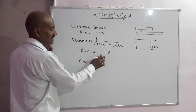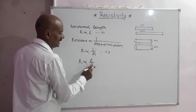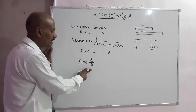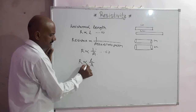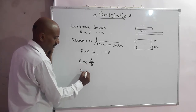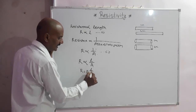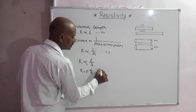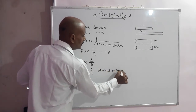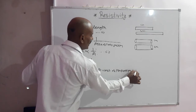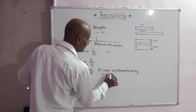By combining equation one and two, we get that resistance is directly proportional to length and inversely proportional to area of cross-section. To remove the proportionality sign, we introduce a constant: R = ρL/A, where ρ is the constant of proportionality. This ρ is called resistivity.